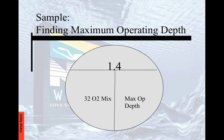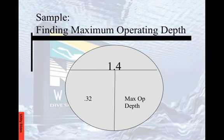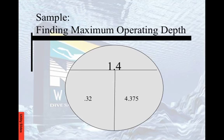For a sample finding the maximum operating depth, here we're using 32 mix. We're going to use a partial pressure of 1.4 — we don't ever want to go over 1.4, as you've learned in other workshops, because going over that 1.4 puts us at risk of oxygen toxicity. So we have our partial pressure of 1.4 for oxygen, and then we're going to divide that by our 32 mix, turning it into a decimal: 1.4 divided by 0.32, which gives us 4.375.